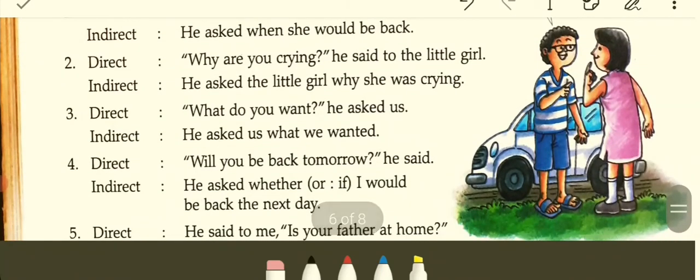Direct: 'What do you want?' Indirect: He asked us what we wanted — 'want' changes to 'wanted.' Direct: 'Will you be back tomorrow?' He asked whether — or 'if' can also be used — he asked if I would be back the next day. 'Tomorrow' changes to 'the next day.'